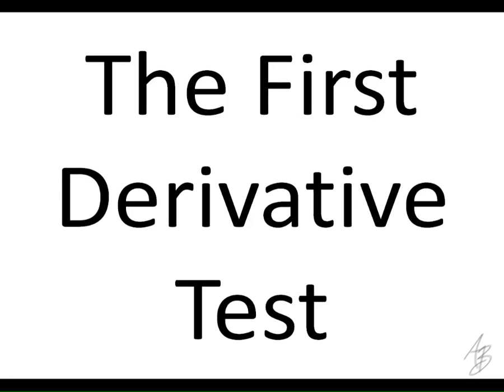This is not a test like an examination. It's a test like we're testing a point to see if a point — in this case it's going to be a critical point — is going to be a local minimum or local maximum. We've actually talked about the first derivative test already. We're just going to formalize it now in this section.